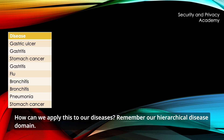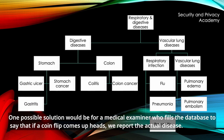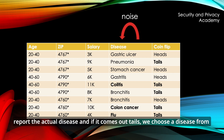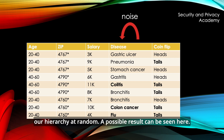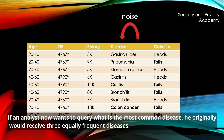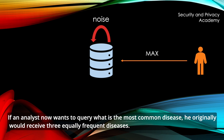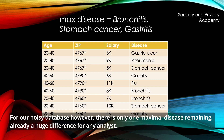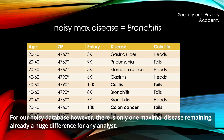How can we apply this to our diseases? Remember our hierarchical disease domain. One possible solution: a medical examiner filling the database uses a coin flip — if it comes up heads, we report the actual disease. If it comes up tails, we flip again. If heads, we still report the actual disease; if tails, we choose a disease from our hierarchy at random. A possible result can be seen here. If an analyst queries the most common disease, they would originally receive three equally frequent diseases. For our noisy database, however, there is only one maximal disease remaining — already a huge difference for any analyst. Randomized response is used in local differential privacy.